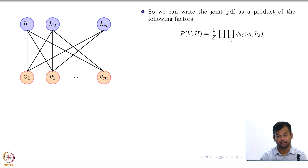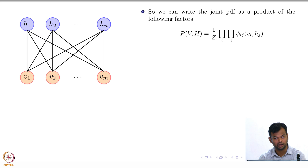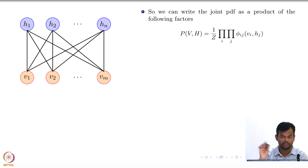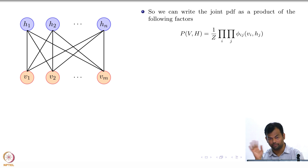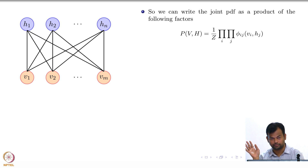For every visible variable and for every hidden variable, you will have a factor which captures their interaction. This particular factor is not a conditional probability distribution — it just tells us the strength of the interaction between them. We have Z for normalization, so that we make it a probability distribution.